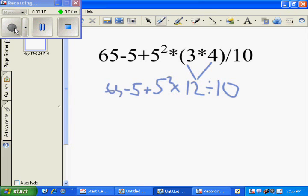Next in PEMDES is E for exponents. Our exponent is 5 to the second power, which would equal 25.